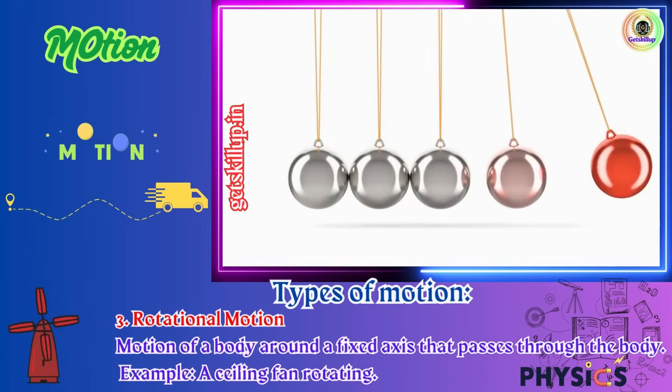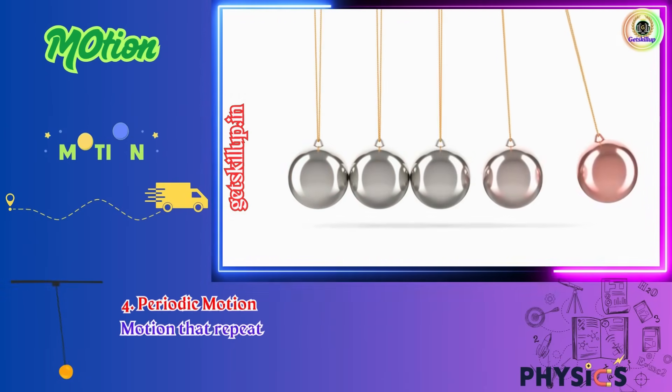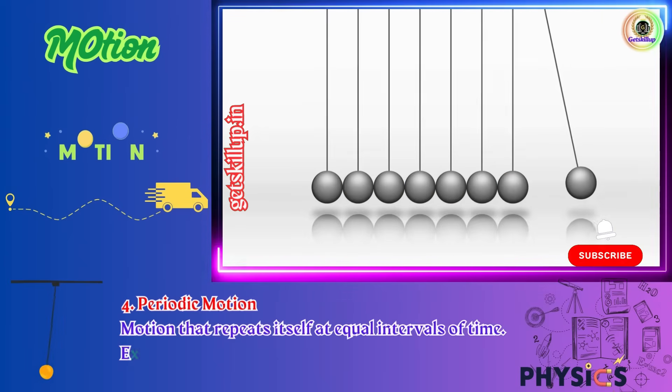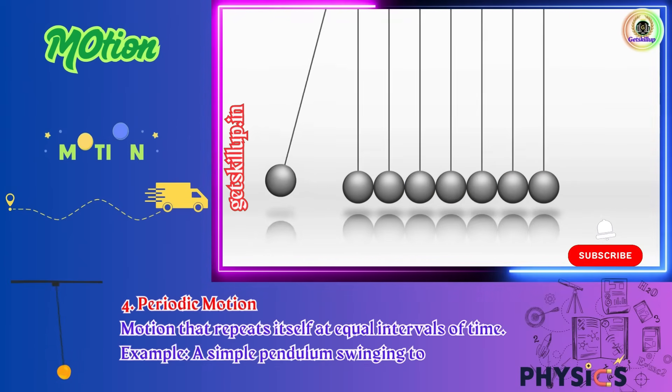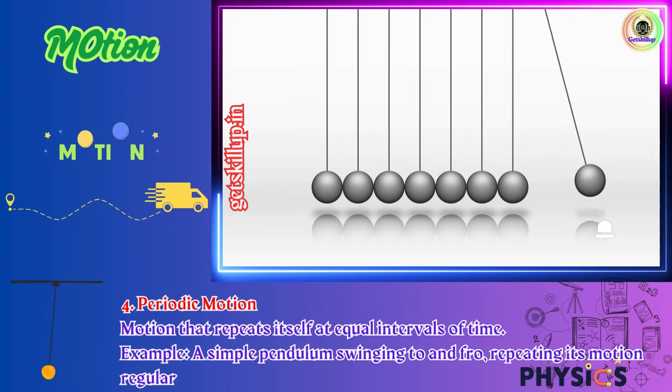Fourth, periodic motion, motion that repeats itself at equal intervals of time. Example, a simple pendulum swinging to and fro, repeating its motion regularly.